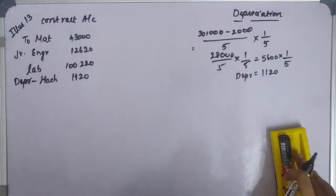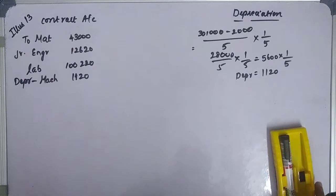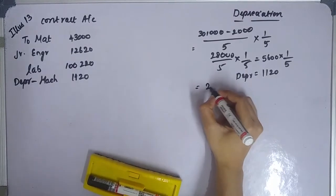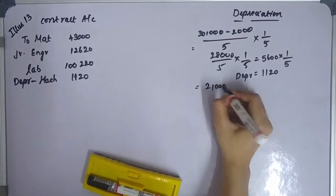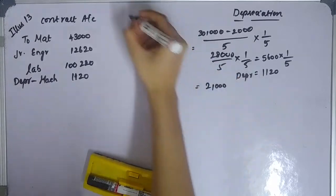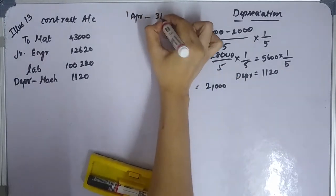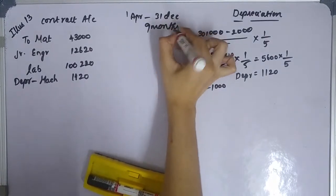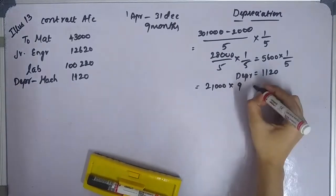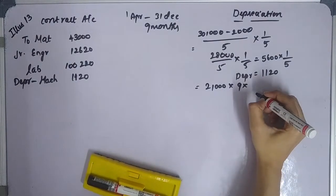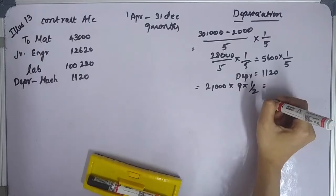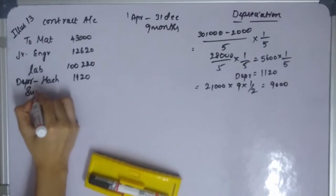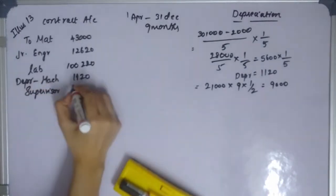The supervisor is paid 2,000 per month and devoted half of his time on the contract. From 1st April to 31st December is 9 months. So supervisor's salary charged to contract = 2,000 × 9 months × one-half = 9,000.